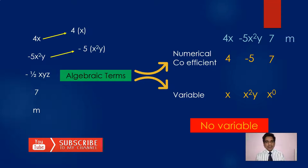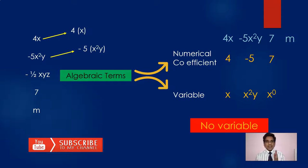Now consider just M — there is only M. As mentioned, a variable is a term. Suppose you have 10: 1 tens are 10, 1 fives are 5. Similarly, M can be written as 1 into M. So whenever there is only a variable, the numerical coefficient is 1.